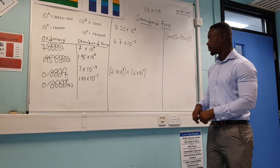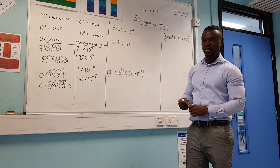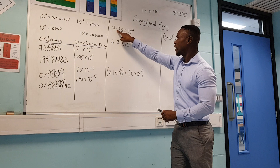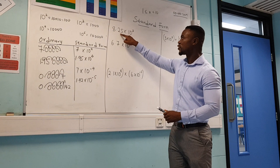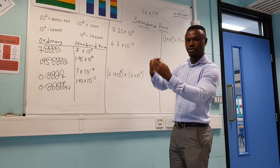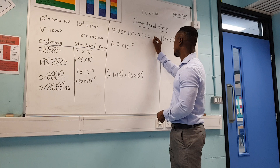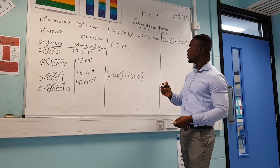Now let's look at writing from standard form back to an ordinary number. The power of 3 tells you that you should have three numbers after the 8. This is the same as 8.25 times by a thousand. To write this as an ordinary number, you multiply by a thousand — when you multiply, you move the decimal point to the right side three times.